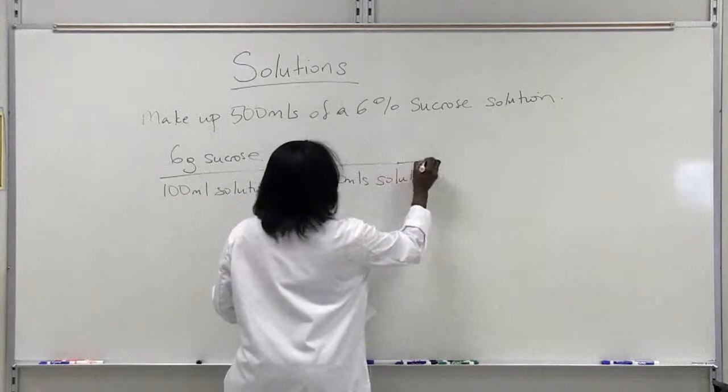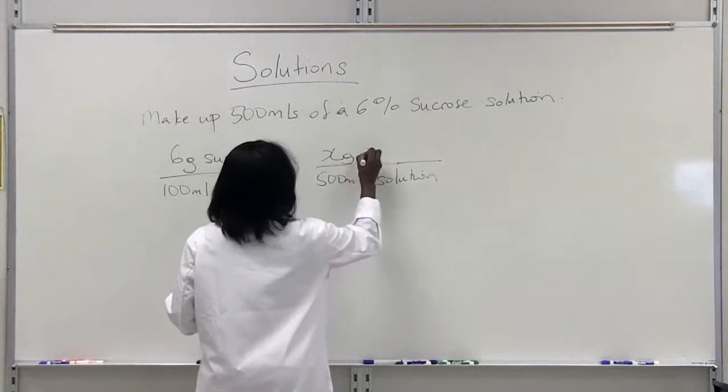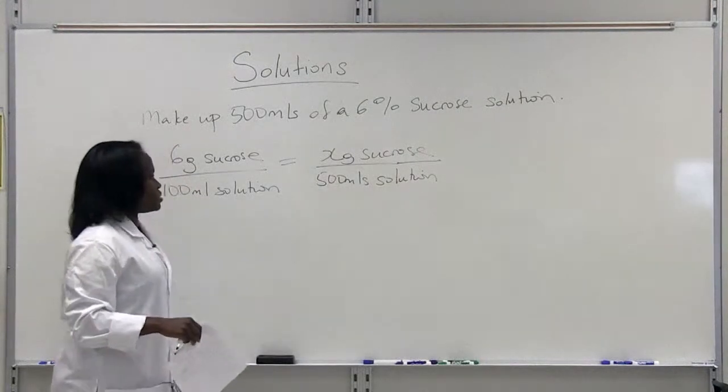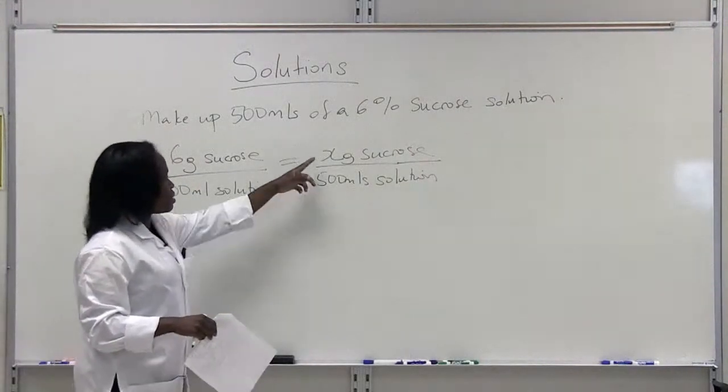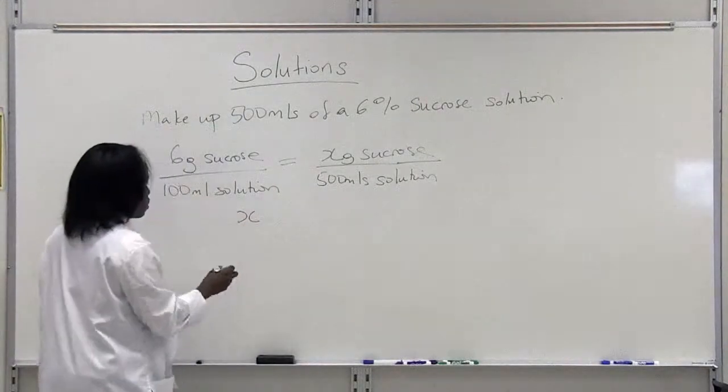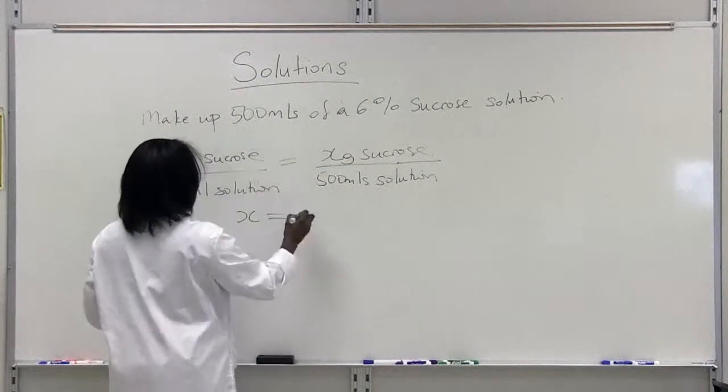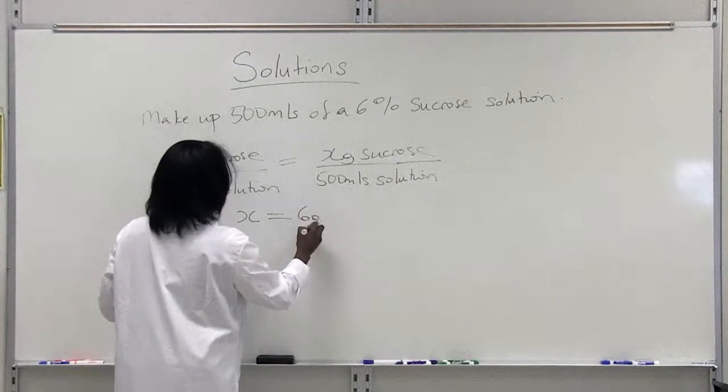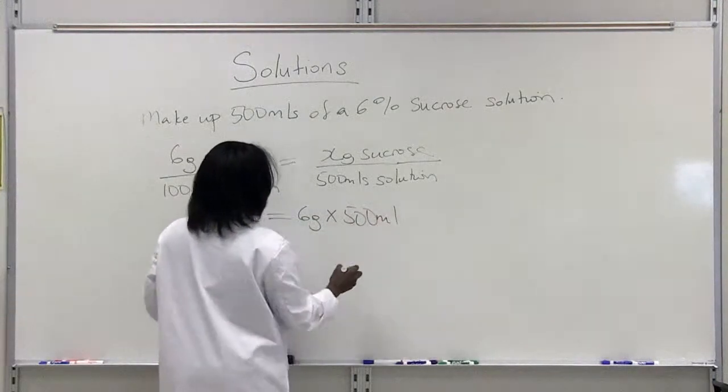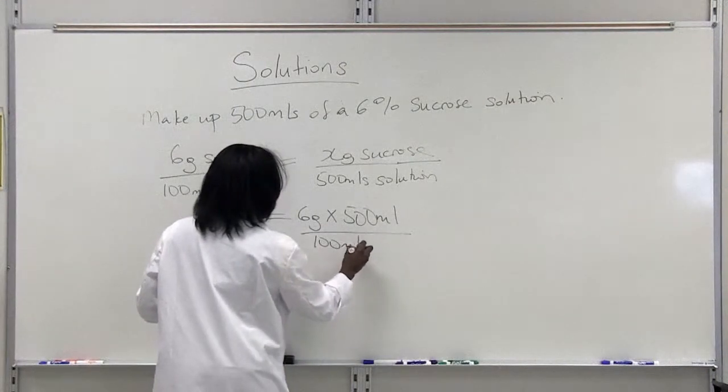Since we don't know how many grams of sucrose we need to add in 500 mls of solution, we're going to solve this by cross multiplication. We make our unknown on one side of our equation, and if we carry this over to the other side...